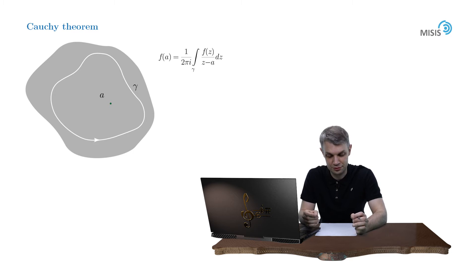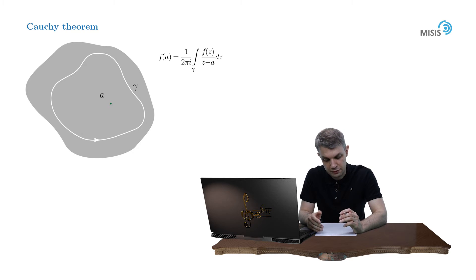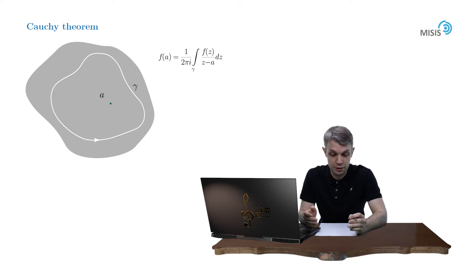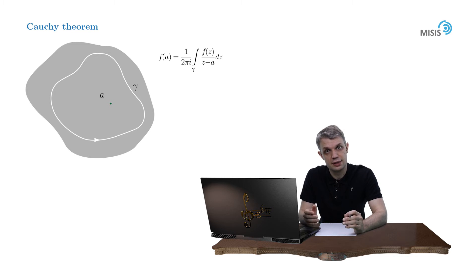Now let's discuss a proof — and you'll be surprised how simple and elegant it is. Let's have a closer look at our right-hand side. We have a closed contour integral, but obviously it doesn't vanish, because Cauchy's integral theorem cannot be applied here: we have the special point z equals A where the integrand is ill-defined. But we'll still be able to use Cauchy's integral theorem if we modify our contour.